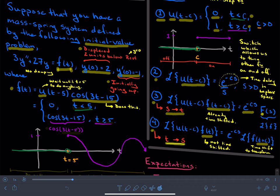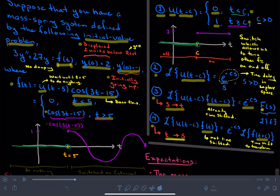This is cosine of 3t minus 15. This step function is just a convenient notation for a piecewise definition. And so what we see with this piecewise definition is that we will wait until 5 seconds to do anything. And then after 5 seconds and beyond, we will fire up this cosine function.